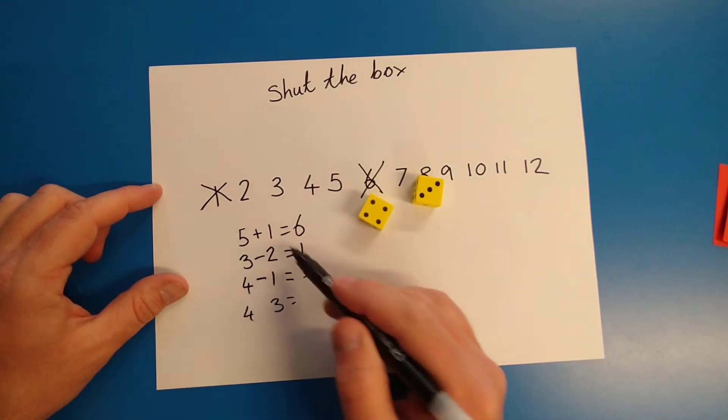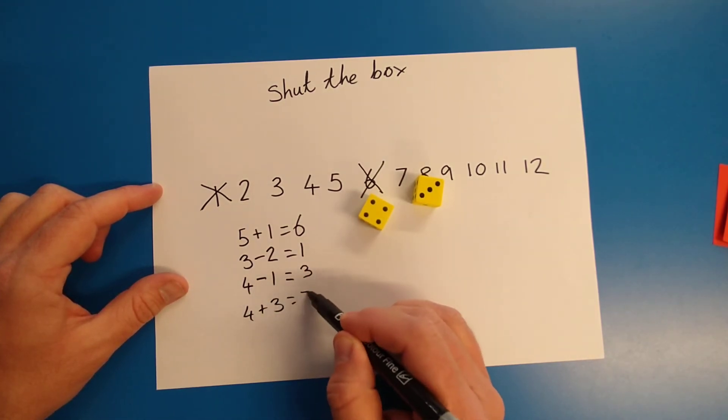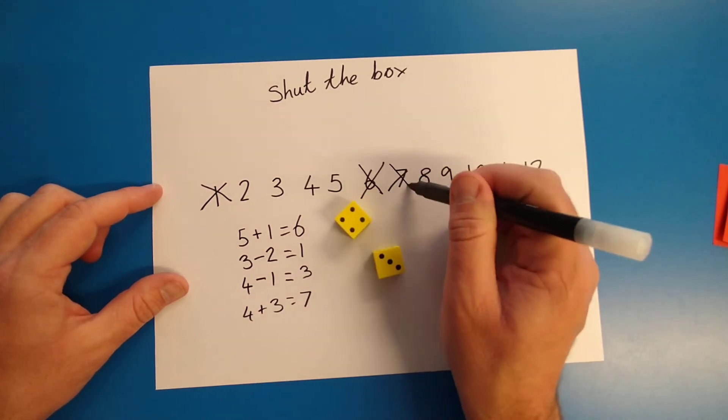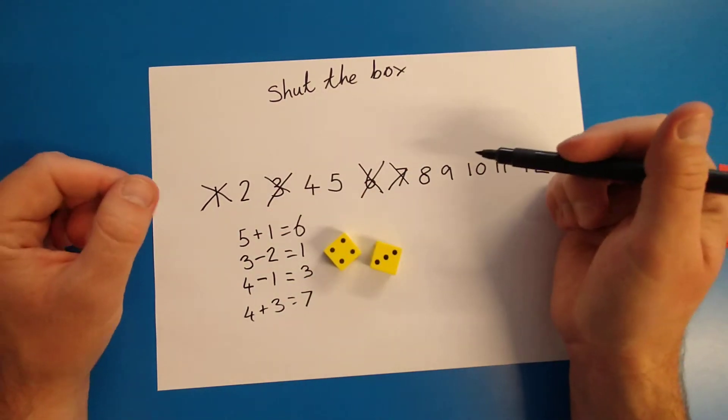And I'm going to keep playing. Four and three. If I take them away, it's one. Oh, so I'm going to add them. Four, five, six, seven. There we go. Oh, I've not crossed that one. Two, three. So that's what you're trying to do. You're trying to cross out all of your numbers.